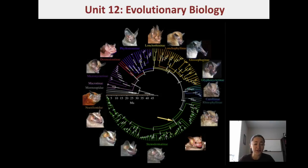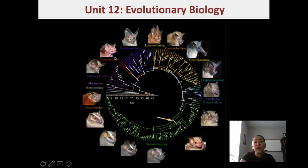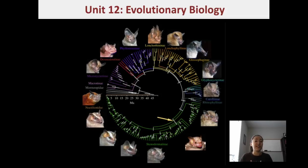We know that populations change over time, and when we see a large diversity of species, those species all shared some common ancestor in the past. For example, all the different species of bats that you see today originated from a common ancestor that existed about 53 million years ago. From that one common ancestor, we now see about 1,100 different species of bats. Modifications and changes in those ancestral populations led to all the diversity you see today.